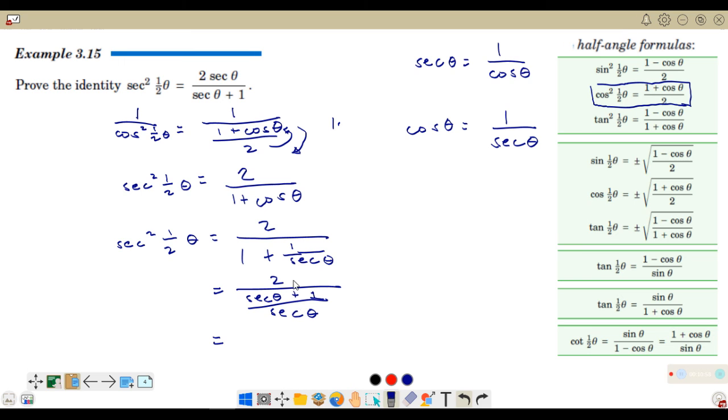Next, what is our rule for division of fraction? So, in division of fraction we change the operation to multiplication, but it becomes the reciprocal of the divisor or denominator. So, let's invert the denominator. Instead of secant theta plus 1 on top, it will go to the bottom as secant theta plus 1 and secant theta will go to the top. Now, let's multiply. 2 times secant theta is 2 secant theta and on the denominator since the denominator is 1 and anything multiplied by 1 is equal to itself, we have secant theta plus 1.